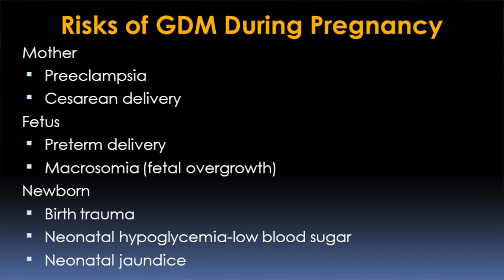Gestational diabetes can have effects both on the mother and the fetus, as well as the newborn. Some of the effects on the mother are an increased risk of preeclampsia, which is a type of high blood pressure that comes on in pregnancy, can be very serious, and can lead to early delivery. Women who have gestational diabetes often have bigger babies, so they have an increased risk of cesarean section, which requires more days in the hospital and a greater time for recovery.